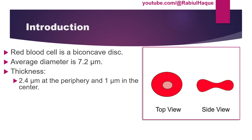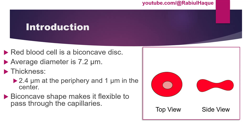Always remember the biconcave shape gives red blood cells flexibility, making them flexible enough to pass through narrow capillaries whose diameters are in fact less than the diameter of an average red blood cell. But since red blood cells are flexible due to their biconcave shape, they can squeeze and pass through those narrow capillaries.